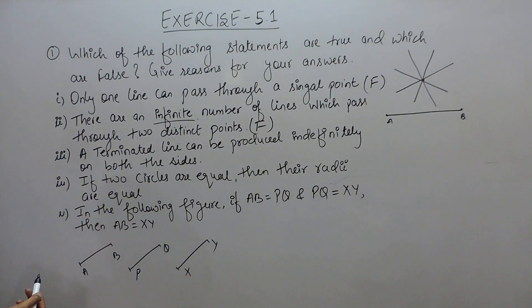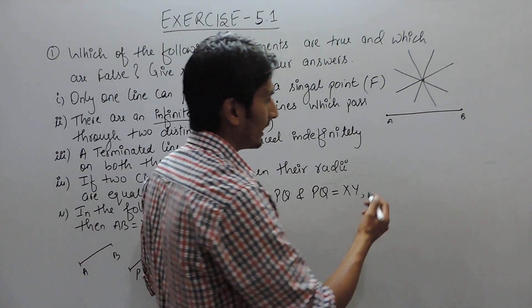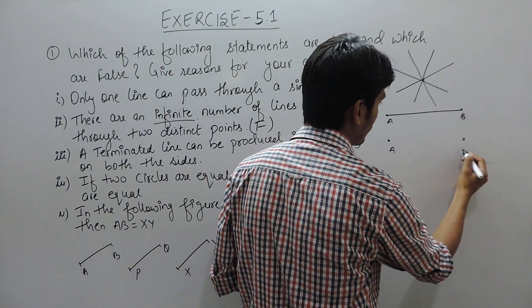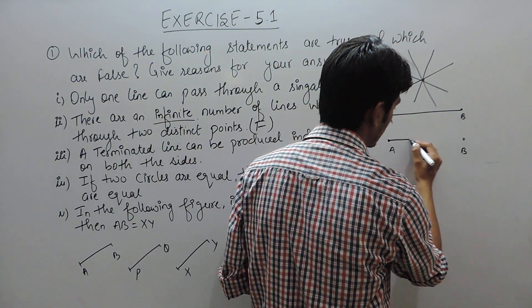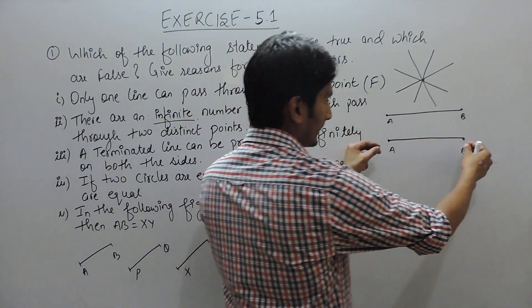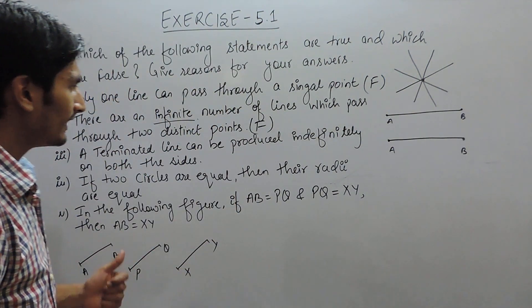Statement third, a terminated line can be produced indefinitely on both the sides. A terminated line means a line whose initial and final point is fixed. So AB is a terminated line because it terminates on A and B, and it is given that it can be produced indefinitely on both the sides.